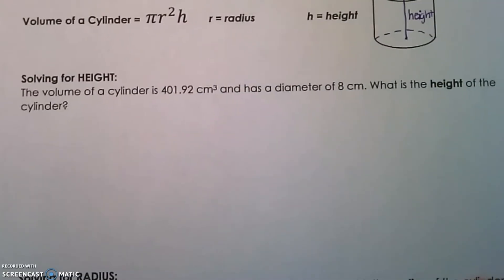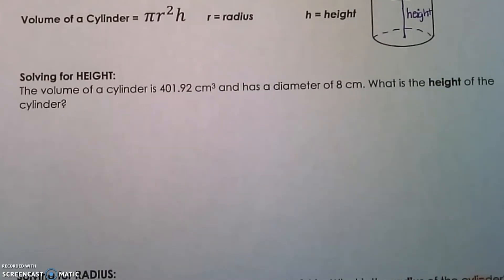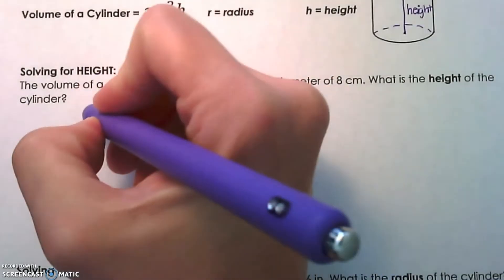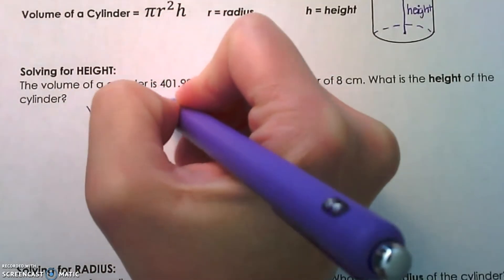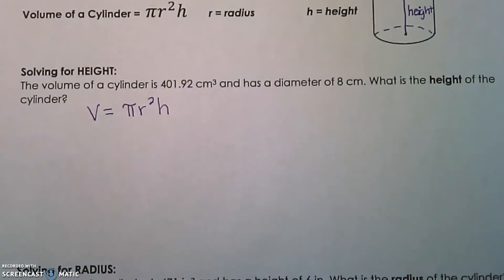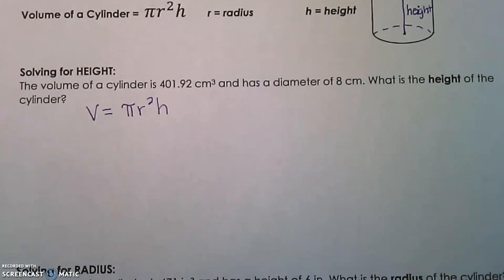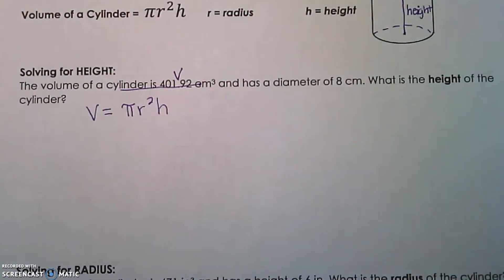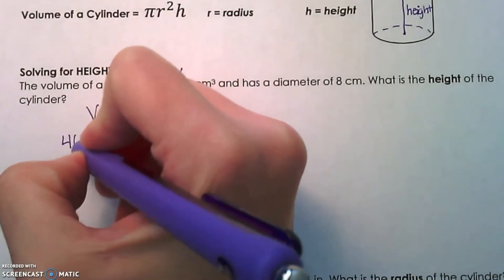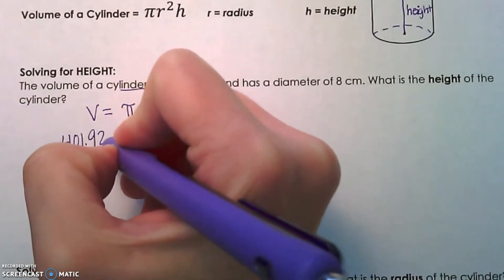Let's look at the first example, solving for height. The volume of the cylinder is 401.92 cubic centimeters with a diameter of 8 centimeters. What is the height of the cylinder? Let's first write down the volume formula: V = πr²h. Now we're going to substitute the given information in. We know that the volume is 401.92, so we're going to sub that in for V in the formula.